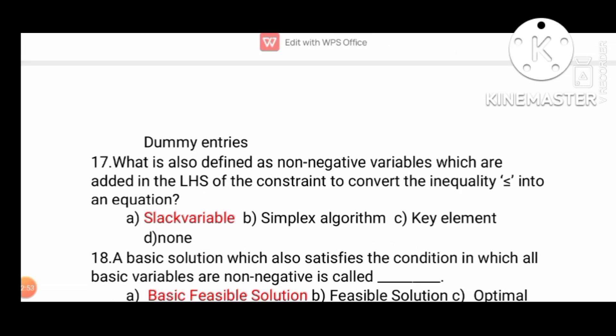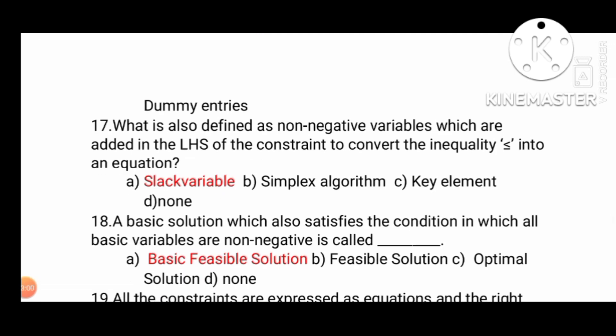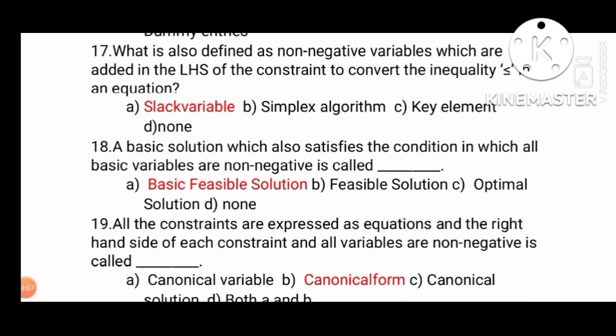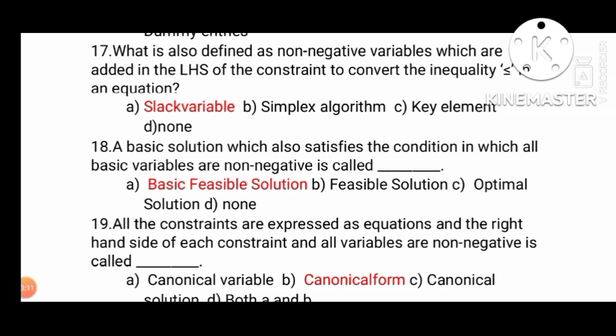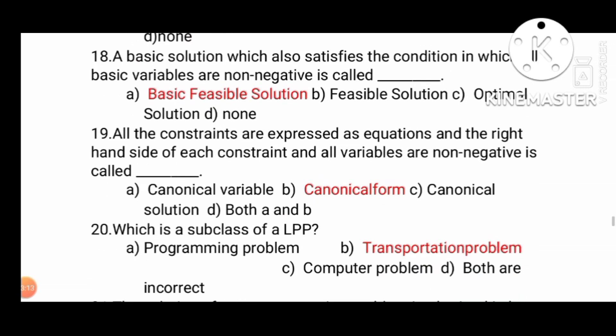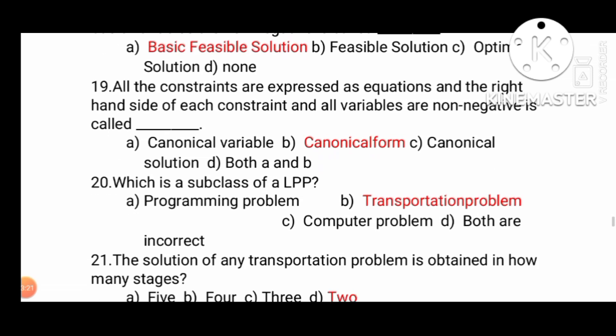What is also defined as non-negative variables which are added in the LHS of the constraint to convert the inequality to an equation? Very important question. The slack variable for less than or equal to, the surplus variable for greater than or equal to. The basic solution which satisfies the condition where all basic variables are non-negative is called the basic feasible solution. All the constraints are expressed as equations and the right-hand side of each constraint and all variables are non-negative is called the canonical form.